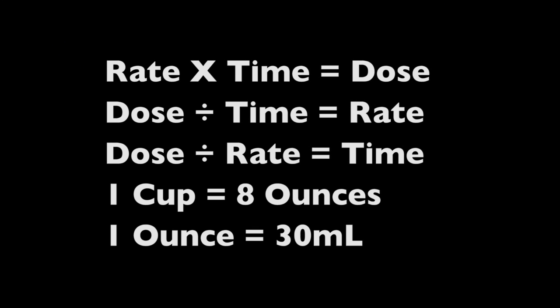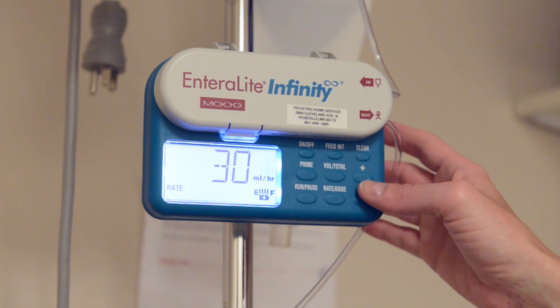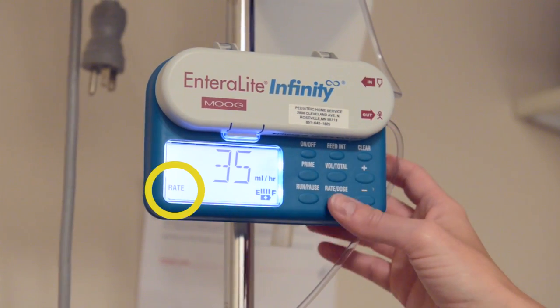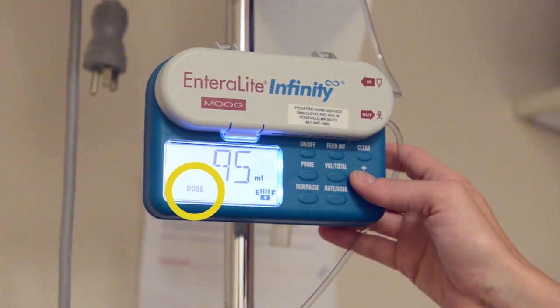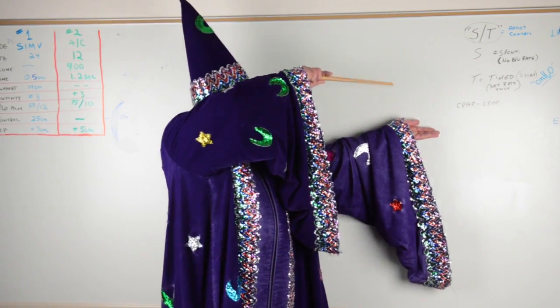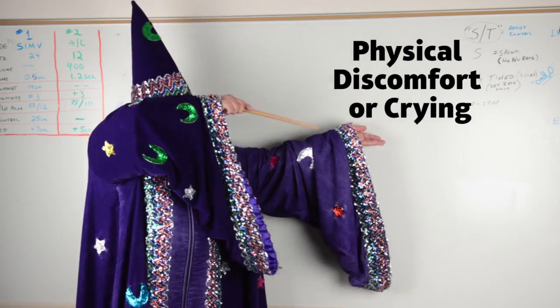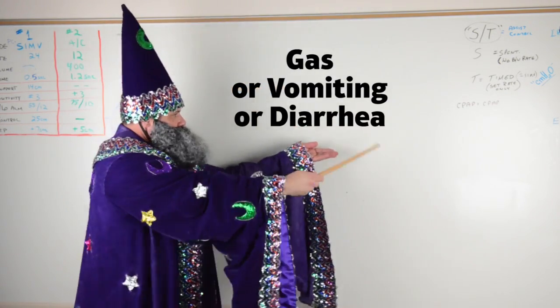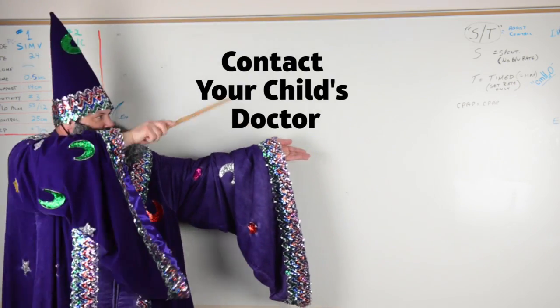That is the end of our examples for how to figure out rate, dose, and time. Remember, keep a note with these key reminders where you can easily find them. Rate multiplied by time equals dose. Dose divided by time equals rate. Dose divided by rate equals time. One cup equals eight ounces and one ounce equals 30 milliliters. Make sure you check that you are entering rate in the food pump display window for rate and dose in the display window for dose. During and after a feeding, watch your child for signs of physical discomfort or crying, gas, vomiting, or diarrhea. If your child has any of these, contact your child's doctor.